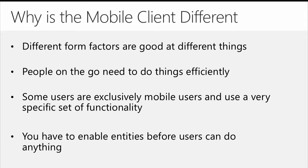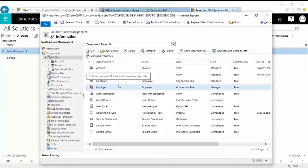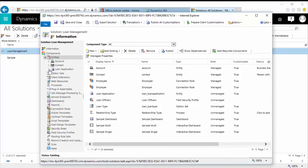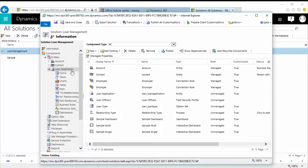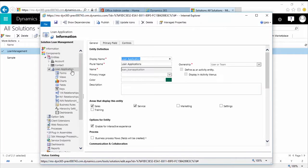One of the things you always want to consider is how do they need to navigate through the mobile application in a way that's going to work? The first and foremost thing at the cornerstone of this is that before you can do anything, you have to make sure that whatever entities you want to work with have been enabled for mobile from a functionality standpoint. So the first thing we're going to show you is what that process looks like — taking the loan application entity and making it available on the mobile app.